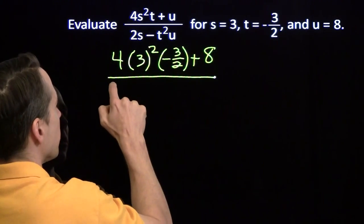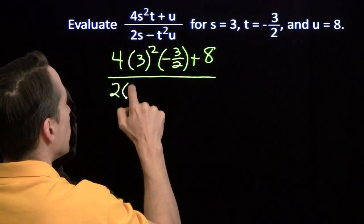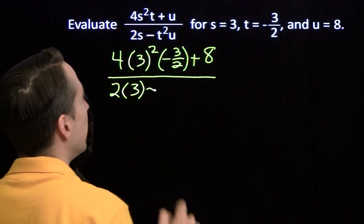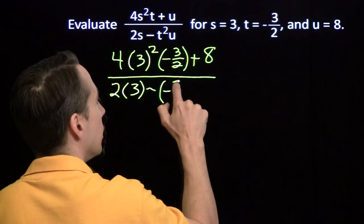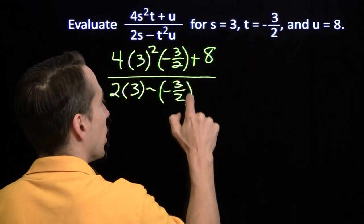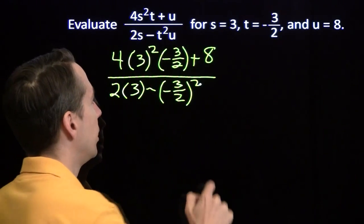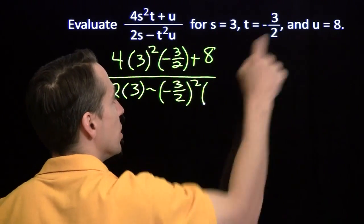2 times s, 2 times 3, minus, and we're putting in negative 3 halves for t. And then we're going to square that. And then we're going to multiply that by u, which is 8.